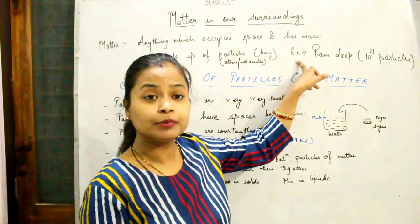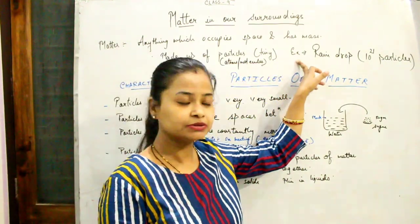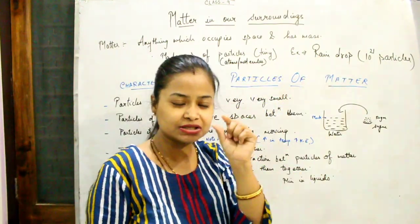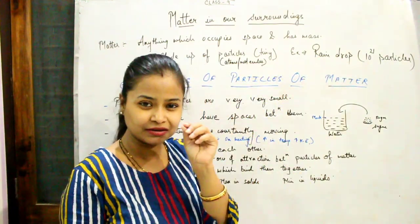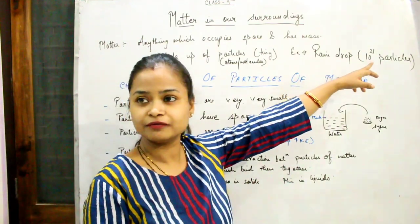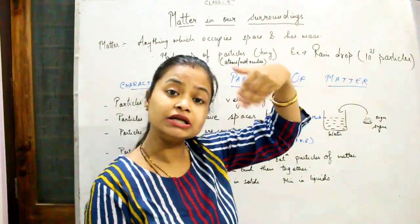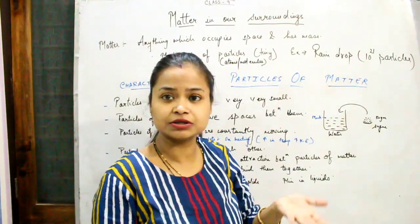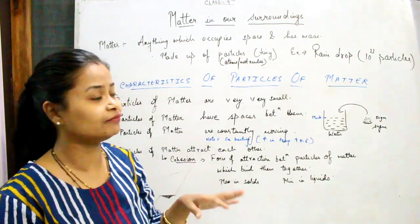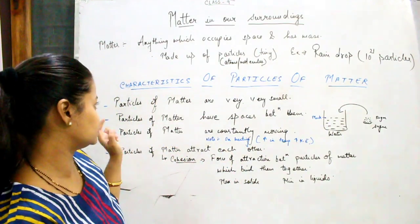We can take one example of raindrops. A raindrop — it is such a tiny raindrop — yet it itself consists of 10 raised to 21 particles.